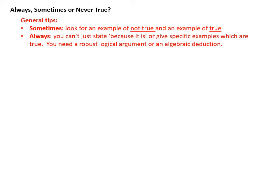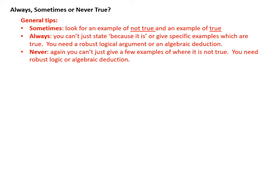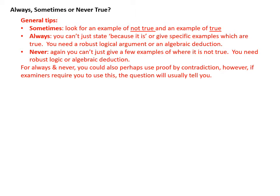For always, you can't just state because it is or just give loads of examples and say it's true for these four or five examples therefore it's always true. You need robust logical argument or more usually algebraic deduction, and the same for never. Sometimes you might be able to use proof by contradiction for always or never true. That's generally a bit more tricky, and if you are required to use it the question will normally lead you to use that proof by contradiction. So if you think it's always or never, generally go to an algebraic argument to support your work.